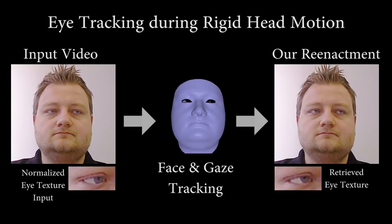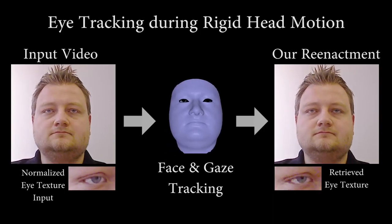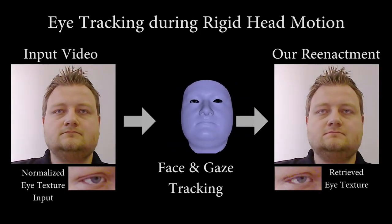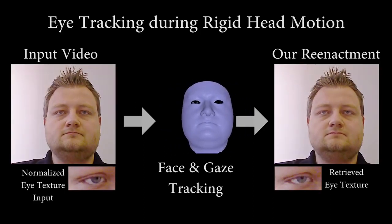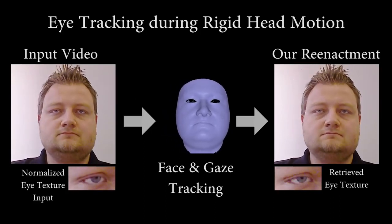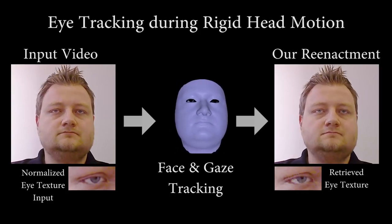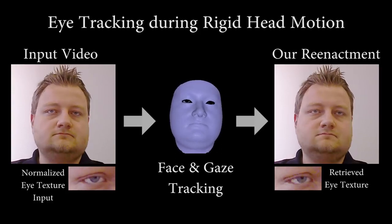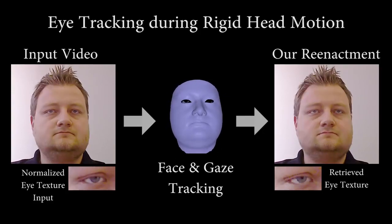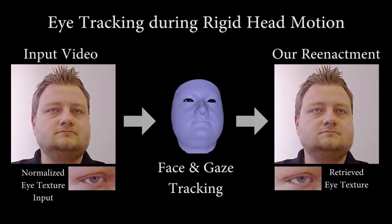Here we show our eye tracking during rigid head motions. On the left, we see the input video and the extracted eye texture that is used to track the eye gaze. With our eye tracker and the reconstructed expression of the source, we reenact the target actor. On the right, we show the final reenactment output, as well as the retrieved eye texture used to synthesize the eyes.